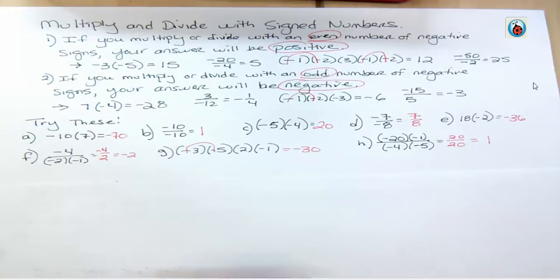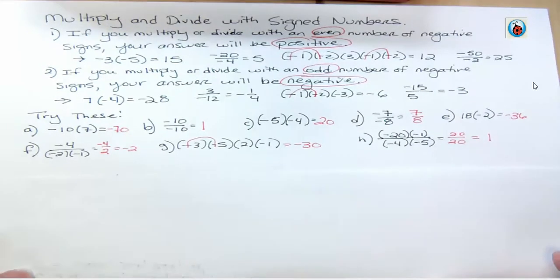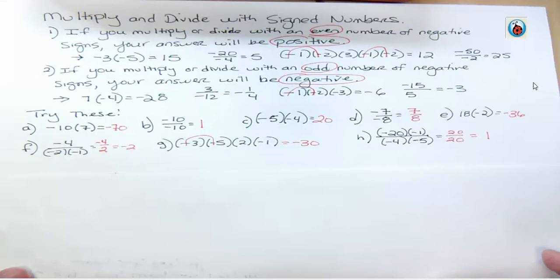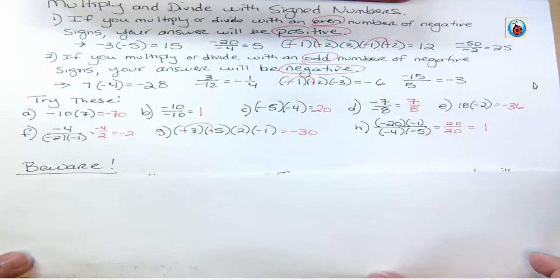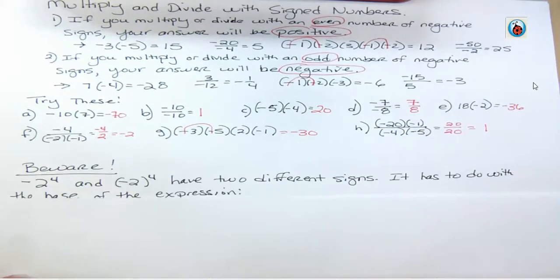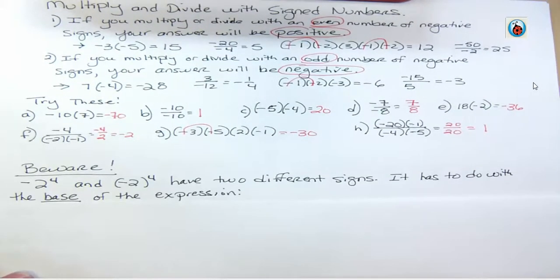Okay, the thing about multiplying and dividing, they're usually easier for people than adding and subtracting, but I want you to beware of something, something that people make mistakes with quite a bit, and that is these two things. Negative 2 to the 4th power and the quantity negative 2 to the 4th power have two different signs when you finish and work that out. It has to do with the base of the expression.